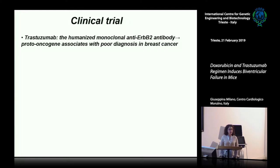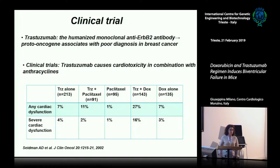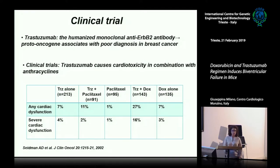Trastuzumab is a humanized monoclonal HER2 antibody, a proto-oncogene associated with poor prognosis in breast cancer. It improves the survival of these patients, but clinical trials have reported that it causes cardiotoxicity. The incidence of this effect ranges from 4% to 7% when administered in monotherapy, but reaches up to 16% to 17% when administered with Doxorubicine.